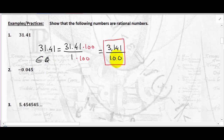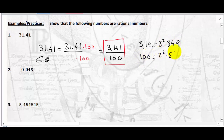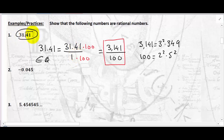You can check that you cannot reduce this fraction. 3,141 is actually equal to 3 squared times 349, while 100 is equal to 2 squared times 5 squared — there are no common factors, so the fraction is irreducible. This is an example of a decimal number with a finite number of digits after the decimal point that can be written as a ratio of two integers. Any such decimal number is a rational number.